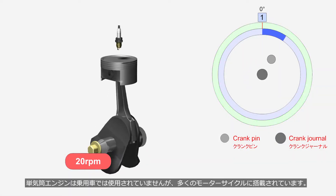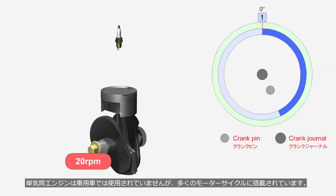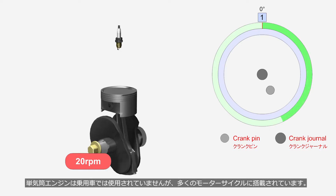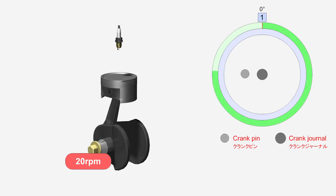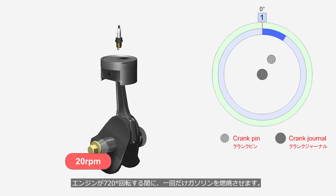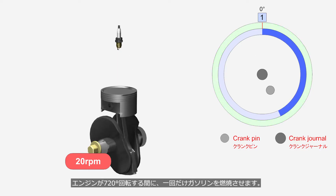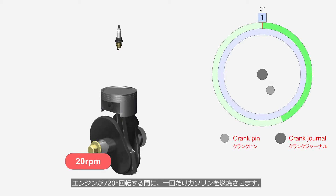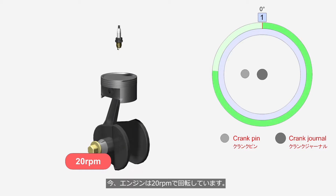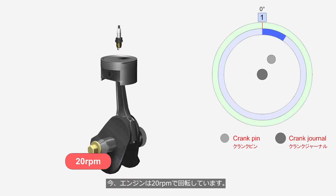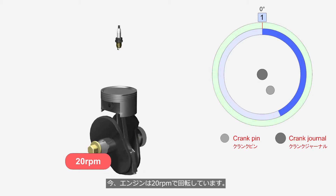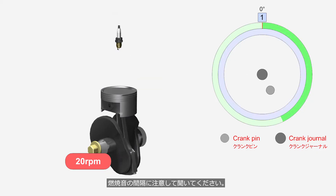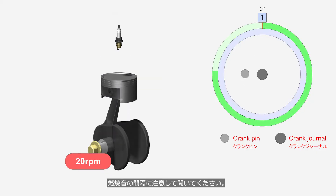Single cylinder engines are not used in passenger cars, but they are installed in many motorcycles. This engine combusts fuel only once during a 720 degrees rotation. The engine is now running at 20 revolutions per minute. Please check the interval of the combustion sound.